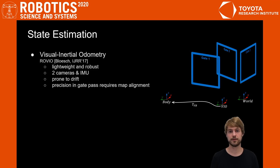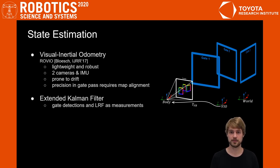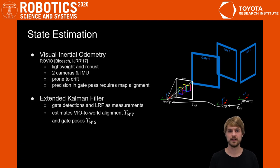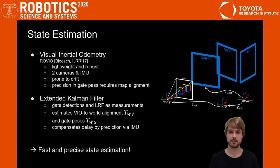This is why we perform map alignment. We use an extended Kalman filter that fuses the output of the VIO together with gate detections and altimeter measurements. This estimates a VIO to world frame alignment and all the gate poses in the world frame. Furthermore, it compensates for delays by predicting forward the IMU. And this provides us with a fast and precise state estimate.